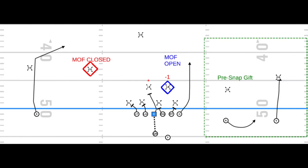This is my least favorite look to run this to. I would prefer to just keep that backside H-back attached, take care of the six box defenders, and read that overhang on the glance route post-snap.